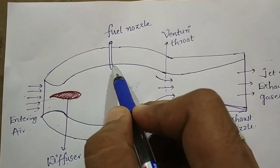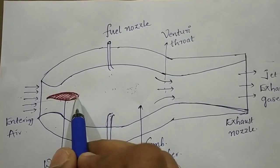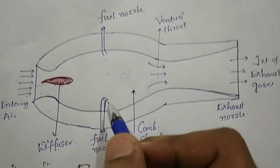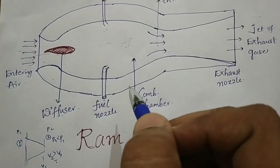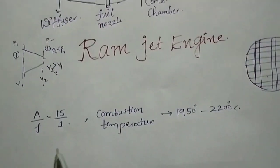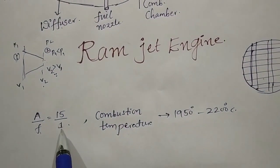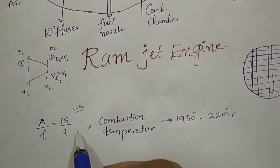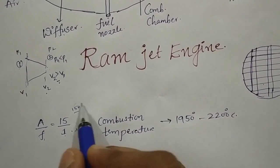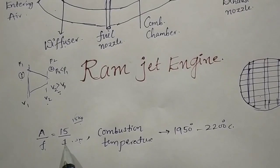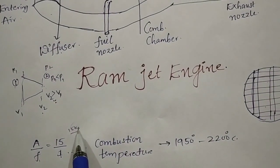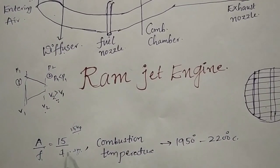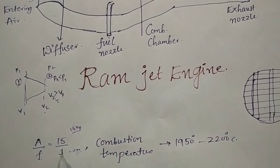Fuel is sent through the nozzle, and the high pressure air is coming from the diffuser. The air-to-fuel ratio in this ramjet engine is 15 to 1. This means 15 kg of air is sent for every 1 kg of fuel, and complete combustion takes place. This is called the air-to-fuel ratio of 15 to 1.